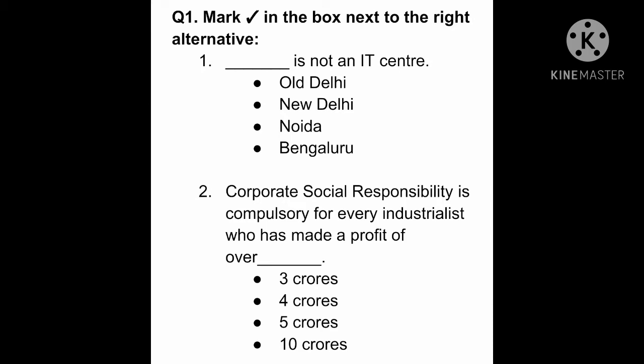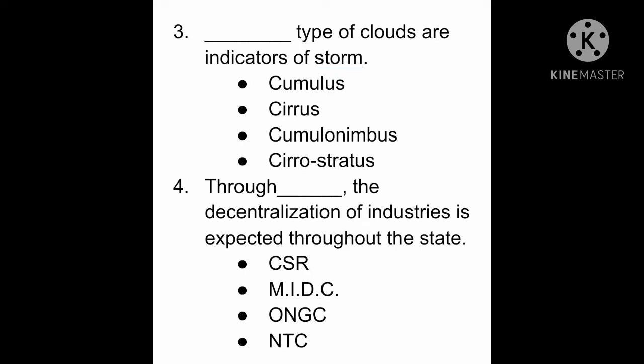Question number 1: Mark a tick in the box next to the right alternative. First: Dash is not an IT center. Second: Corporate social responsibility is compulsory for every industrialist who has made a profit of over Dash — options are given to you. Third: Dash type of clouds are indicators of storm — options are given to you. Fourth: Through Dash, the decentralization of industries is expected throughout the state — options are given to you.